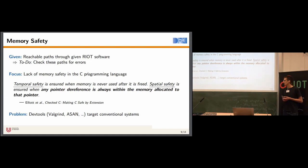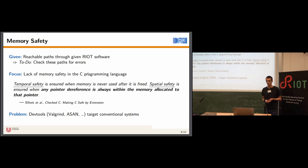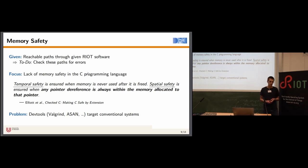We need to define what kinds of errors we want to detect on each path, and then check each executed path for such an error condition. The focus of our work is the lack of memory safety in the C programming language. There are two aspects to memory safety: temporal safety, which is ensured when memory is never used after it's freed; and spatial safety, which is ensured when any pointer dereference is always within the memory allocated to that pointer.